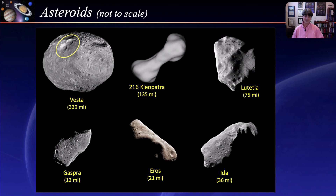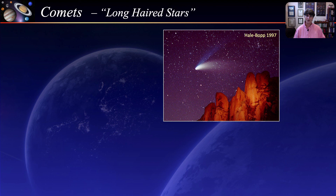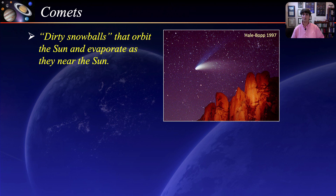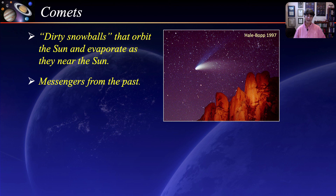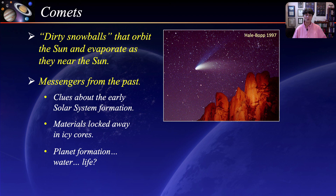Finally, we come to comets and the far reaches of our solar system. The word comet comes from the Greek aster cometis, or long-haired stars. Comets are more like dirty snowballs that orbit the sun and evaporate as they pass close to the sun. As with asteroids, comets are messengers from the solar system's past and can give us clues about the formation of the solar system. Some of the early solar system materials have been locked away in the icy core of comets, and their far-flung orbits have kept the sun from degrading these original building blocks. The substances they carry can help us answer questions about how our planet formed, where it got its water, and possibly even where it got its life.